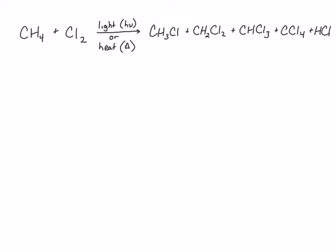Notice that this is not a balanced reaction equation, but we're not going to balance it because doing so would be very complicated. What the overall equation tells us is what reactants give us what products. Each of these chlorine-containing products is a substitution product. However, to simplify our discussion of the mechanism, we are going to consider only the formation of the first product, chloromethane.